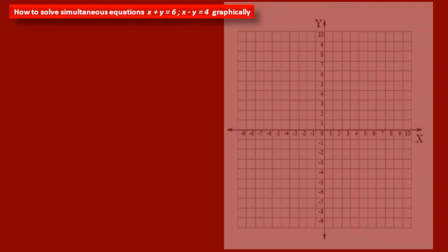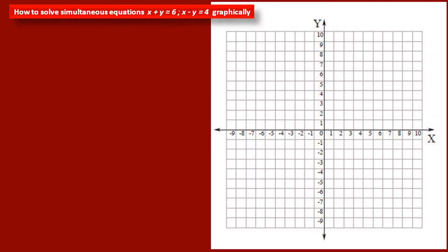Now we have to solve these two equations by using a graph, means our coordinate system. We have to draw graphs of these two linear equations. The graph of a linear equation is a straight line. That means we will get two straight lines. These straight lines will intersect each other at one point, and the coordinates of this point is the solution of the given linear equations.